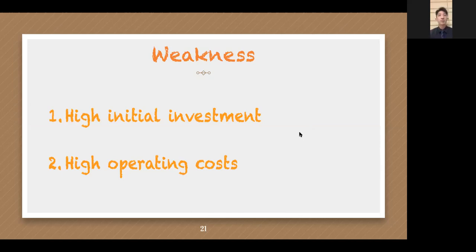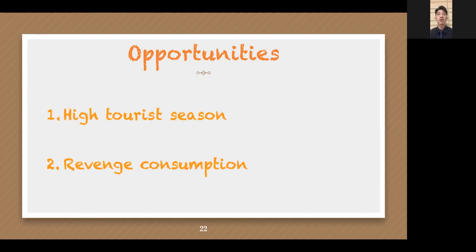For opportunities: the first point is the high tourist season. The hotel industry is always closely related to the tourism industry. Every time the peak tourist season comes, the hotel industry will be in its peak season, with many families and friends traveling together. Shangri-La Hotel caters to high-income people who travel abroad. The second point is revenue from consumption cycles: after each economic recession, the industry will recover, and a large number of companies may fail due to broken capital chains, but when the economy recovers, consumers will experience a wave of peak spending due to explosive consumption.